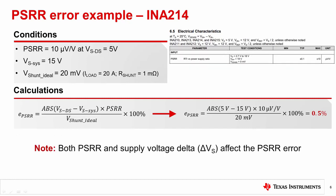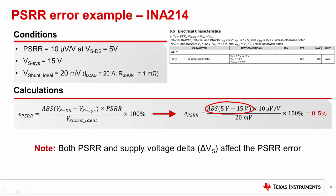Let's take the same example we looked at previously, but substitute a device with improved PSRR — the INA214, at 10 microvolts per volt. As you can see, this results in an error of only 0.5%. The other factor in the numerator is the major contributor to this error: the offset is specified at a supply of 5 volts. So by using a 15-volt system supply, that delta of 10 volts is greater than in the case of the INA195, where the corresponding delta is 3 volts. Had we used the same 3-volt supply voltage delta, the PSRR error would have been only 0.15%, a 10 times improvement over the INA195.